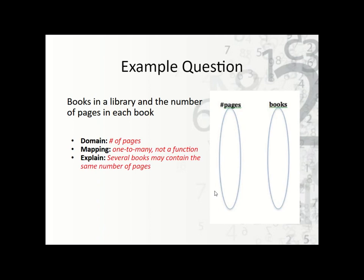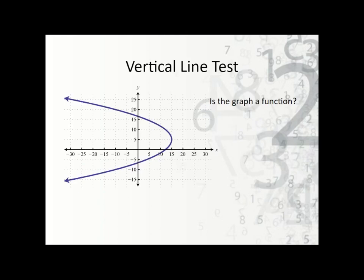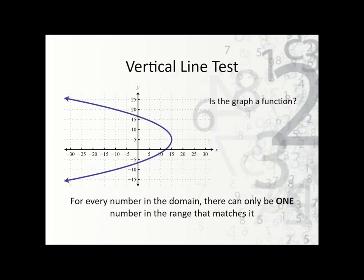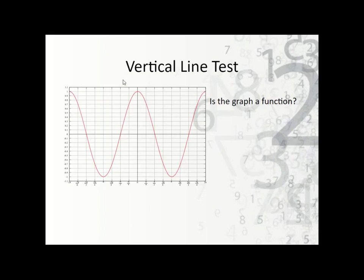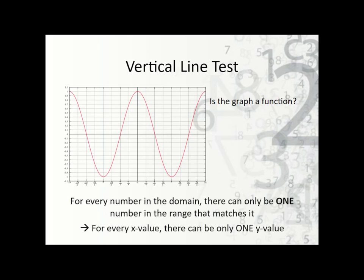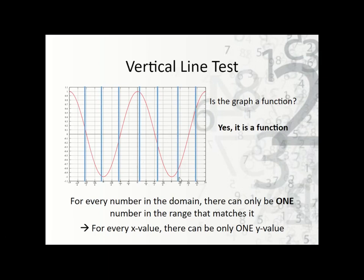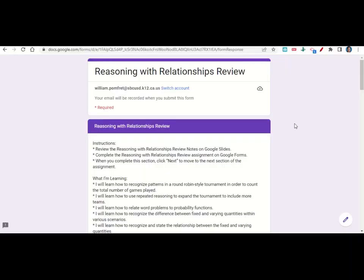Now let's take a look at the vertical line test — another way to check if something is a function. We need to check if there's exactly one y for every x, or one member of the range for every member of the domain. If at any point I can draw a vertical line through the graph and touch it in two places, then it is not a function. In this first case we draw a line and we can see that it is not a function. In the second example, no matter where I draw my line it still doesn't touch in two places — so therefore this is a function.